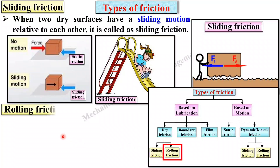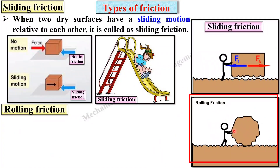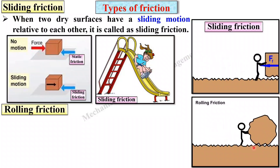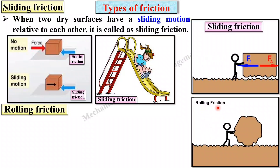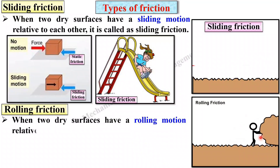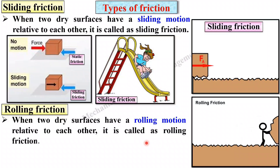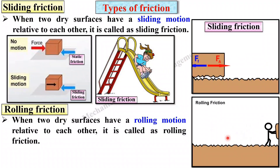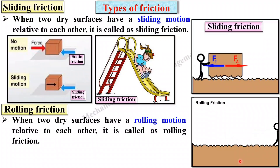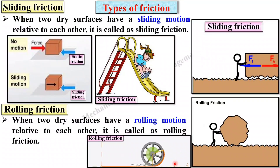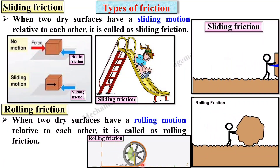Next, rolling friction. When a body rolls over a surface, the friction between these two surfaces is known as rolling friction. When two dry surfaces have a rolling motion relative to each other, it is called rolling friction. In sliding friction the body slides over the other surface; in rolling friction the body has a rolling motion — for example, a wheel rolling over the surface.